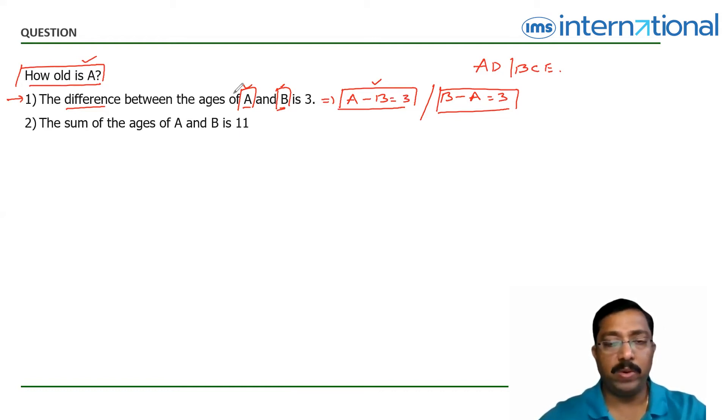Now, so over here, you just have a linear equation with two variables, which won't be sufficient enough to arrive at a definite value as an answer to A. Hence, we can strike off AD.